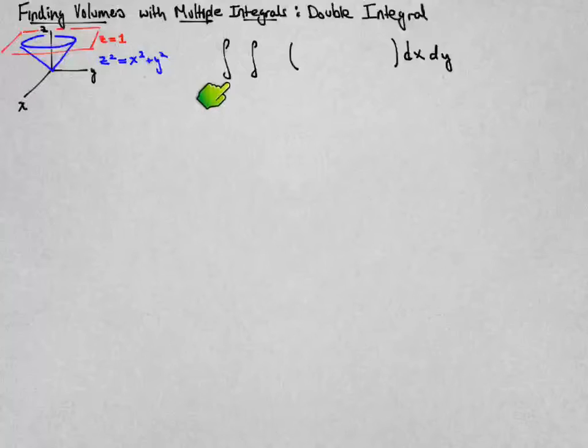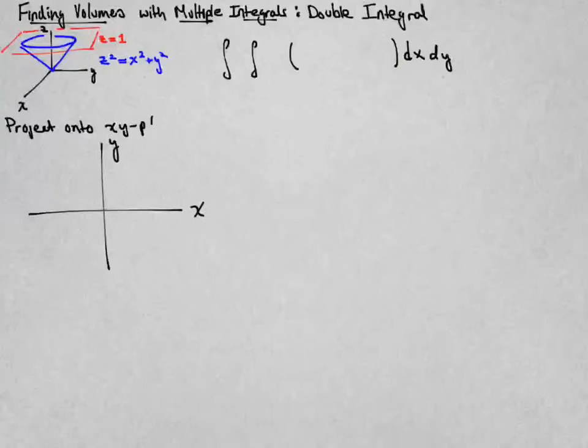To do so, we're going to do it as a double integral. I've arbitrarily chosen the order of integration, and I have to decide what we're going to integrate. So first, let's just think about what the region of integration should be.